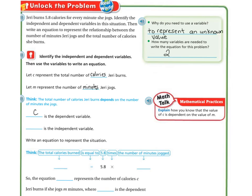And the independent variable is going to be M for minutes, because the more minutes she jogs, the more calories she burns. So the calories are dependent on the minutes.